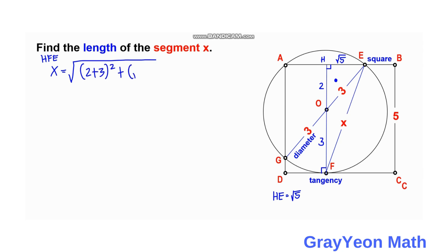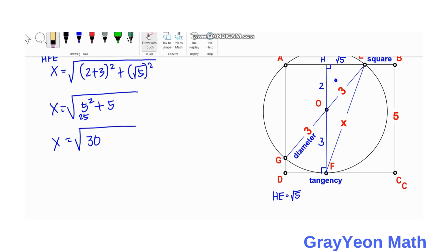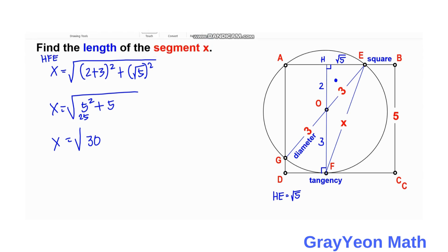So we have x is equal to the square root of 5 squared plus 5. So this becomes 25, so plus 5 this becomes 30. So the value of x is actually the square root of 30 units.